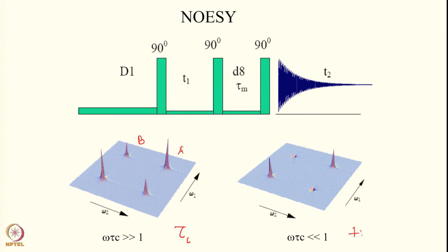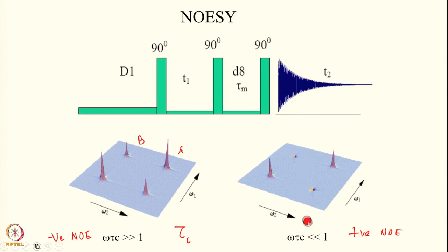For small molecules you will have positive NOEs, and for large molecules negative NOEs. In the 2D spectrum, with negative NOE the cross peaks and diagonal peaks appear with the same sign — both up, on the same side of the plane. With positive NOE, the cross peaks go below the plane, appearing on the negative side. This distinction is extremely important because it directly tells you whether it is a small or large molecule, and can also identify rapidly moving segments within a large molecule.